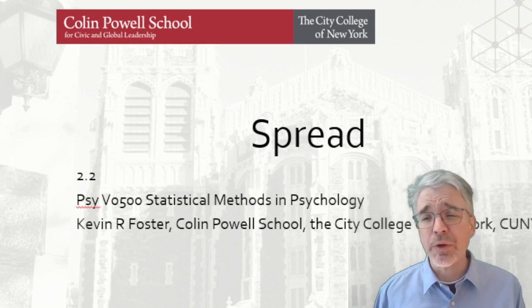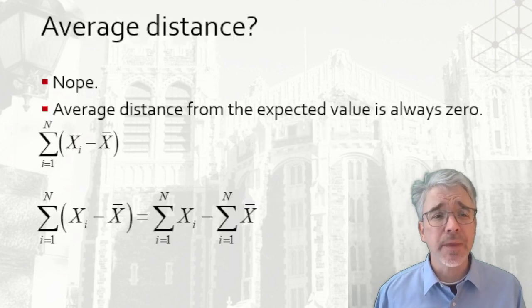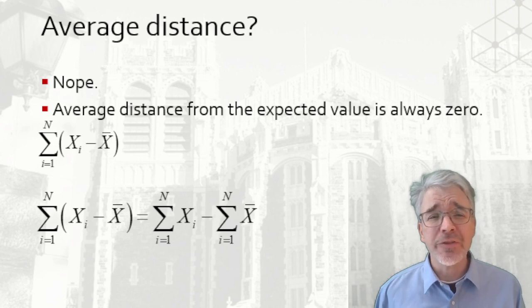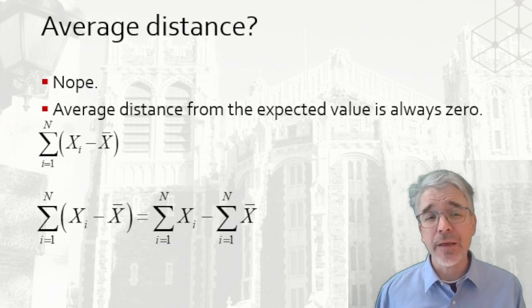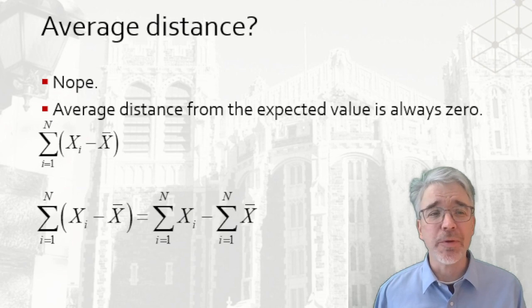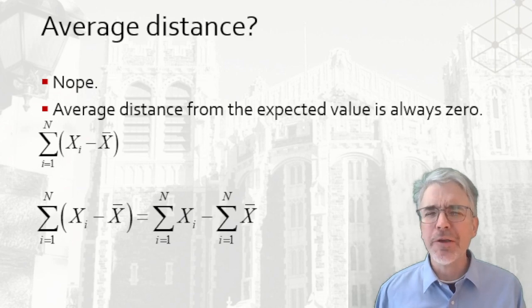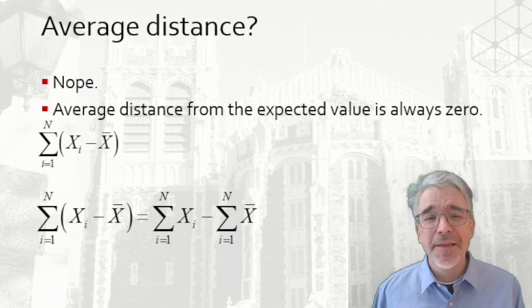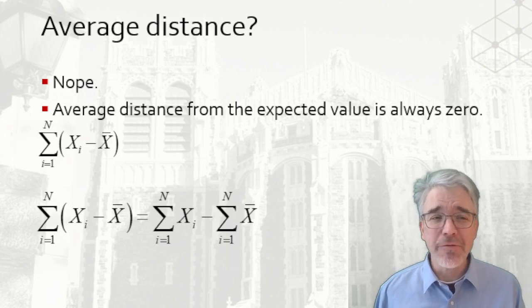Now you might think just take the average difference of how far observations are from the average, but that won't work. There's an old joke about a tenant who complains to the super that in winter their apartment is 50 degrees and in summer it's 90 degrees, and the super responds, 'What are you complaining about? The apartment's a comfortable 70 degrees on average!'